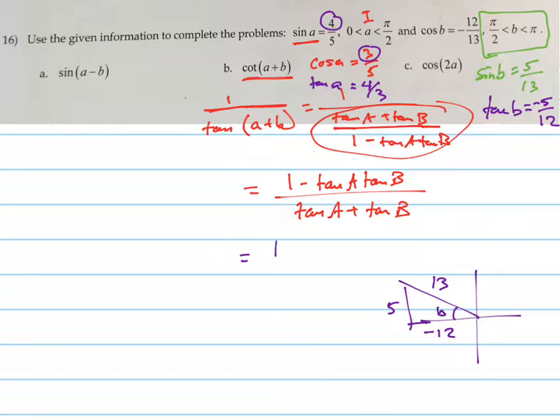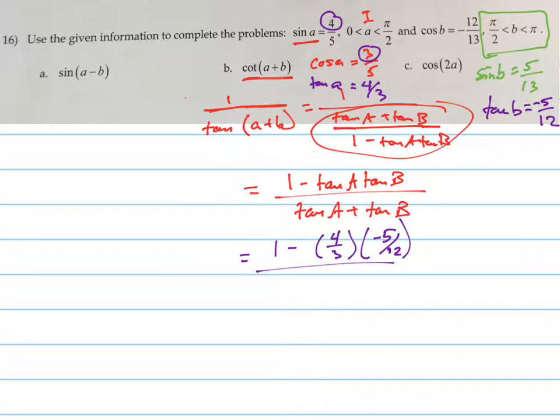So just plug those straight in. So this equals 1 minus the tan A is 4 thirds, the tan B is negative 5 twelfths, all over the tan of A, which is 4 thirds plus tan B, which is negative 5 twelfths. Now we just have a big old mess that we have to deal with.